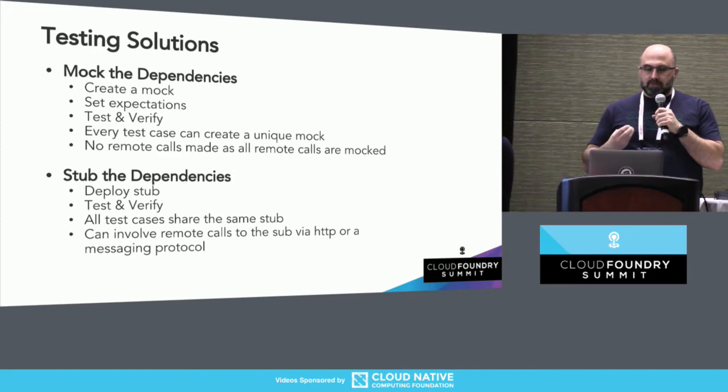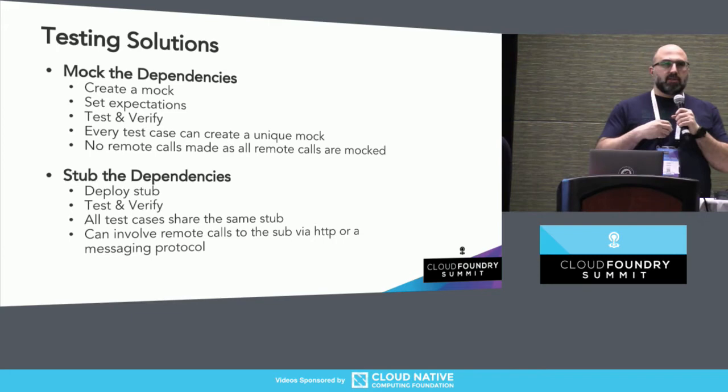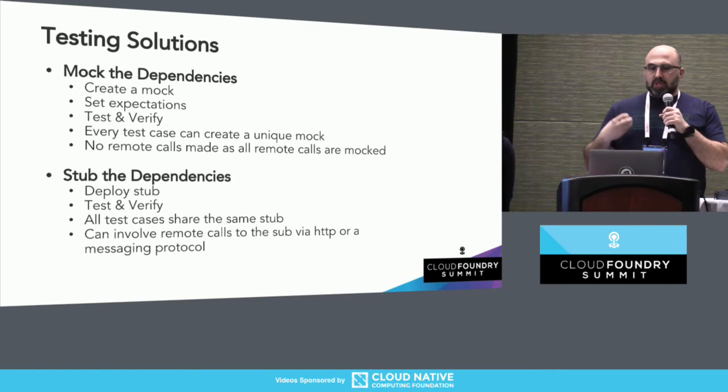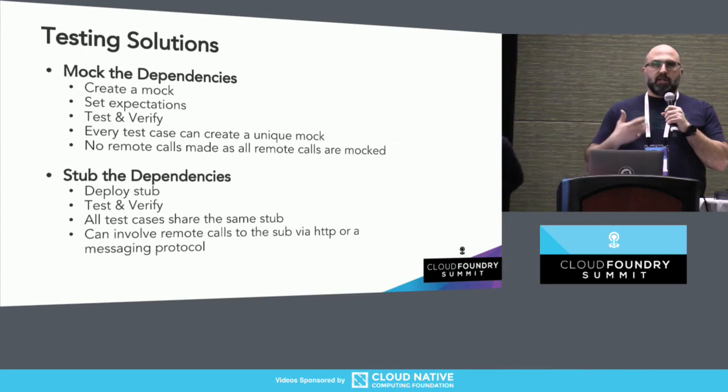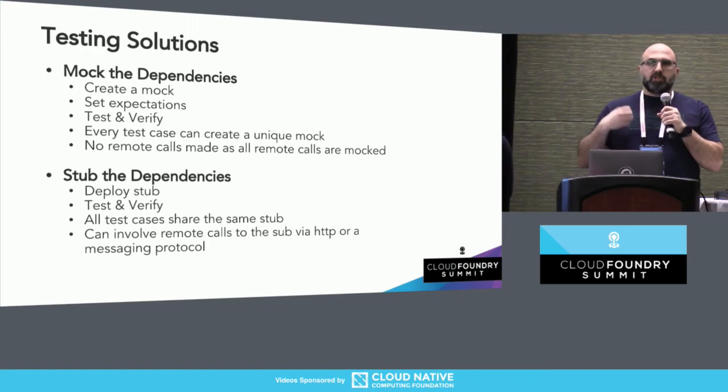The key idea with mocks is that every single test first sets up the mock for their needs. You typically don't make remote calls when mocks are involved — you rely on the programming language runtime, maybe doing bytecode generation in Java. You use tools like Mockito and other frameworks to auto-generate the mocks. Stubs, on the other hand, tend to be things that are the same for all tests. With a stub, I'll make one stub and multiple tests will utilize it. We also tend to be able to do remote calls — I might actually start up a dummy server using something like WireMock, receive real HTTP requests, and return canned responses.